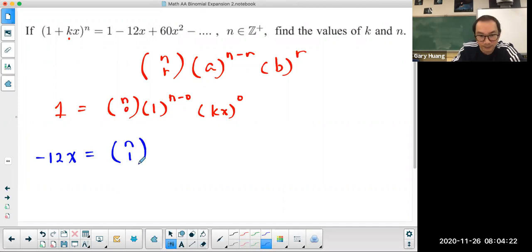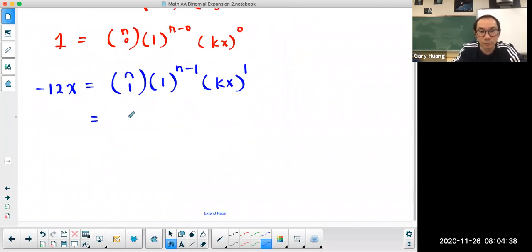In the second term, now n is choosing 1. Your a, which is 1, is raised to the power of n minus 1. And your second term, b, kx, is now raised to the power of 1. Now if I expand the right-hand side, n choose 1 is just n. 1 raised to the power of n minus 1 is still 1, and k times x to the power of 1 is kx.